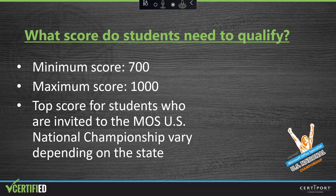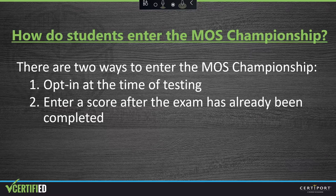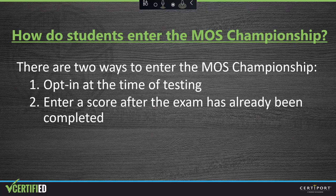It's that easy to qualify, but there is something very important that all students need to do if they want to enter their exam into the championship. There are two ways that students can enter. The first and easiest way is to opt in their exam score at the time of testing. Before the exam launches, a window will appear on the screen asking the student if he or she would like to enter their exam score into the competition. As their teacher, we recommend that you encourage all of your students to opt in their exam score into the competition as they launch their exam.